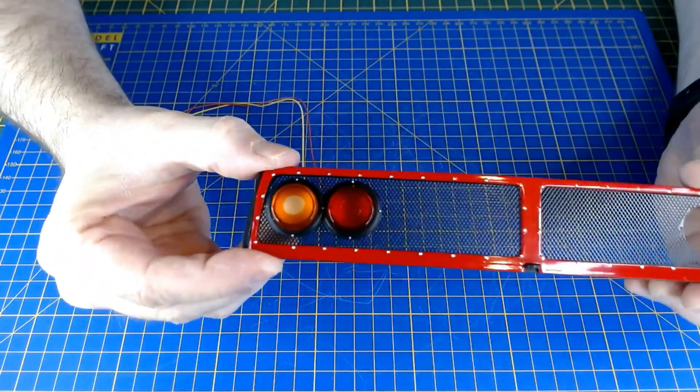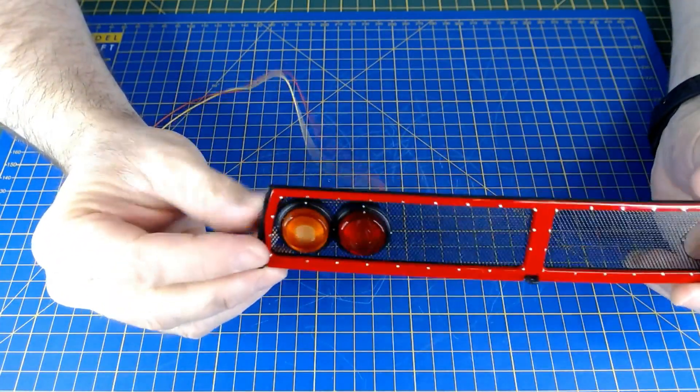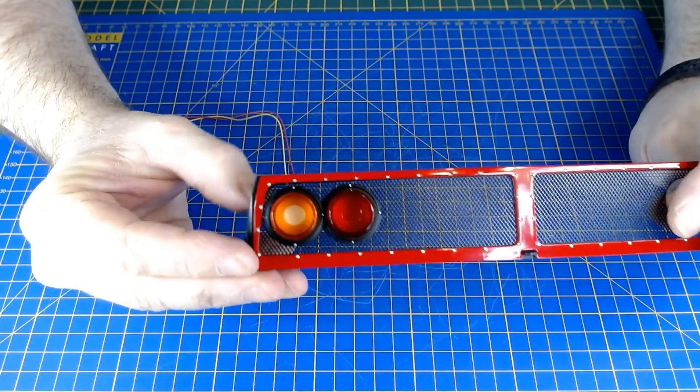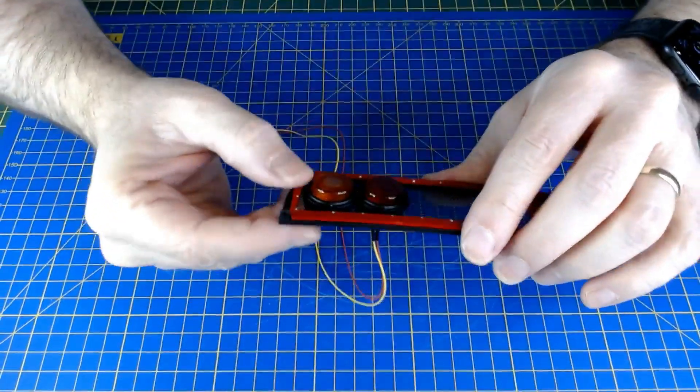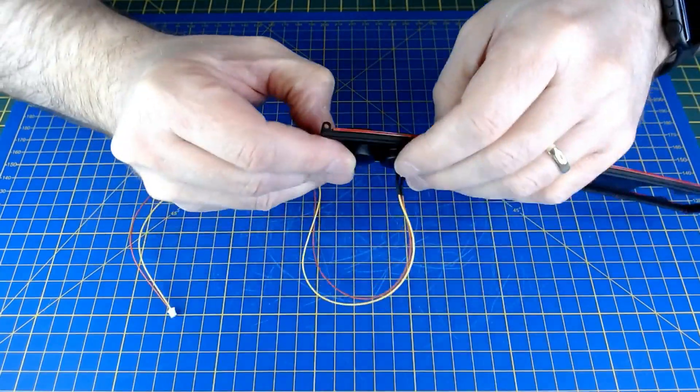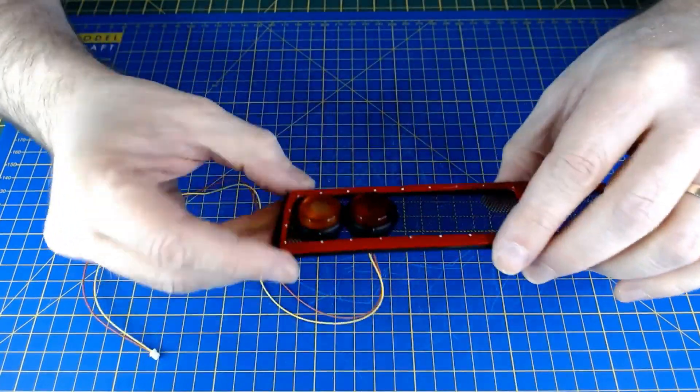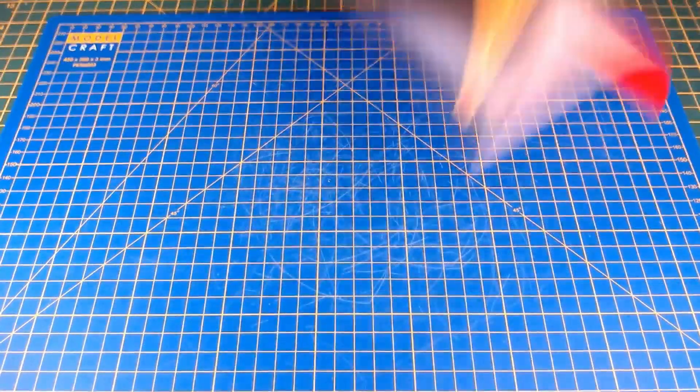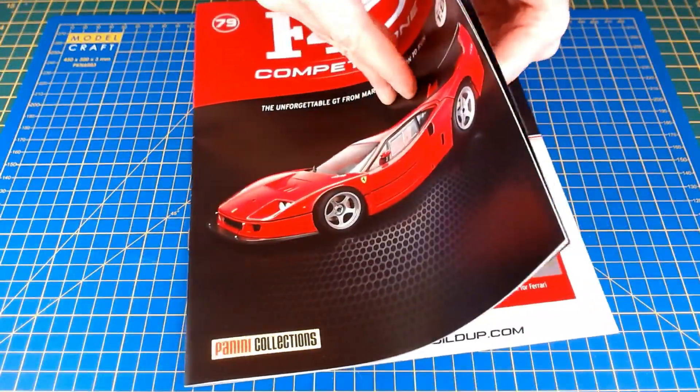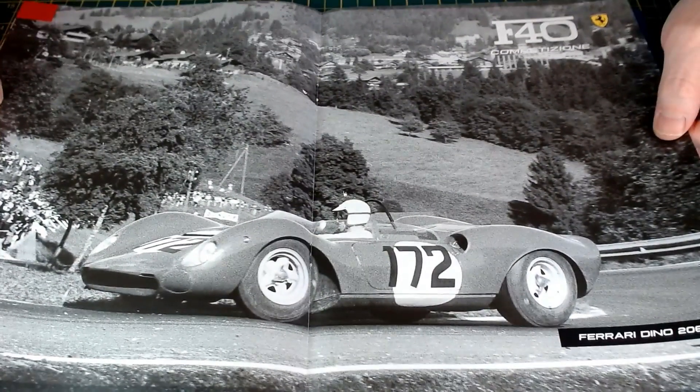So that looks like it's complete, the rear light fitted. Yeah, there you go. Okay, so that was issue 79 there. The center picture, black and white image, Ferrari Dino.